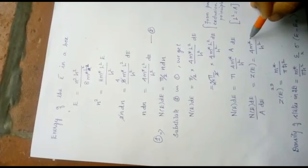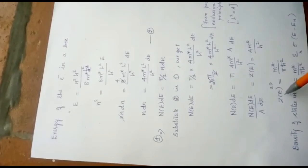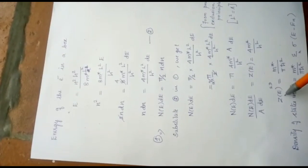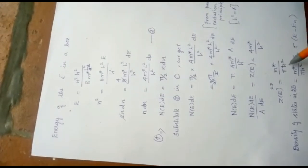Then, here pi also come. Then, density of states, rho of E, 2D is equal to m star by pi h square.